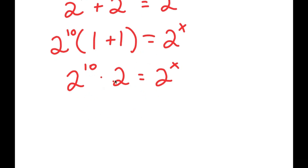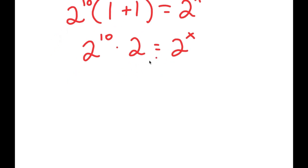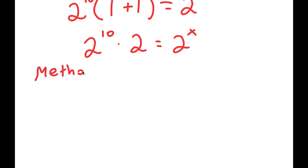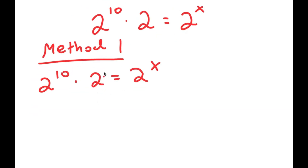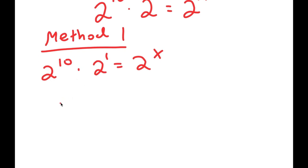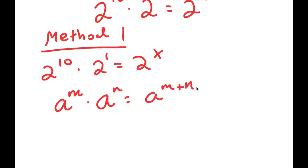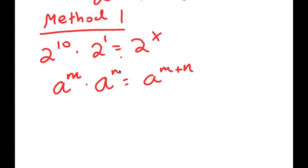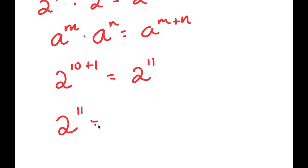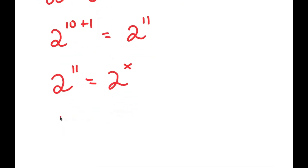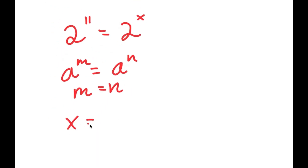For method 1, I have 2 to the power of 10 times 2 is equal to 2 to the power of x. I'm going to rewrite 2 as 2 to the power of 1. Now, if I have something in the form a to the power of m times a to the power of n, this equals a to the power of m plus n. So 2 to the power of 10 times 2 to the power of 1 equals 2 to the power of 10 plus 1, which is 2 to the power of 11. Since 2 to the power of 11 equals 2 to the power of x, and if a^m = a^n then m = n, x is equal to 11.